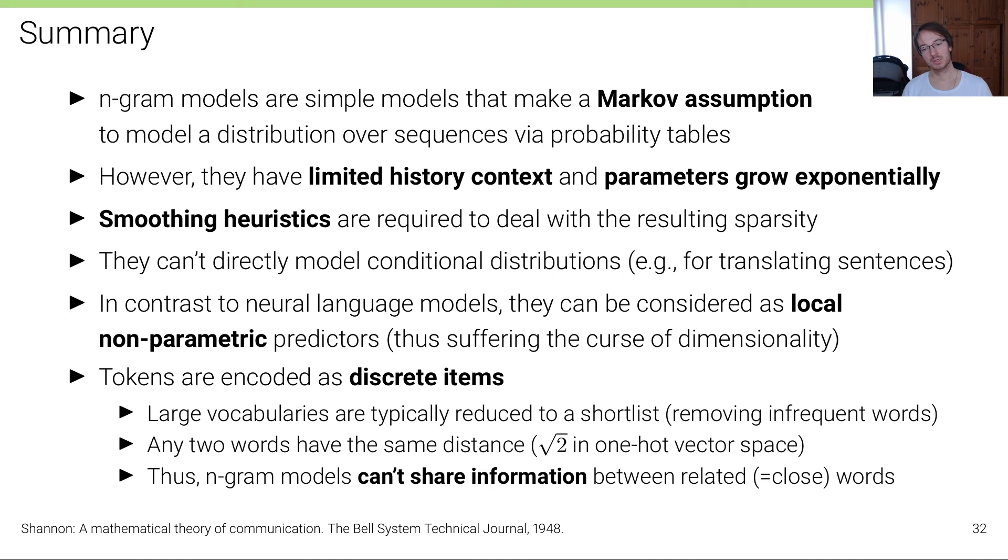But then something that's really problematic is that any two words in such a discrete representation of words have the same distance. If you think about a one-hot vector for each word, the distance between each word is square root of two. Therefore the n-grams can't share information between related words. There might be two words that are semantically related - it would be beneficial for the machine learning model to exploit that, but it's just impossible with such kind of n-gram models. And this is also the motivation for the next unit.